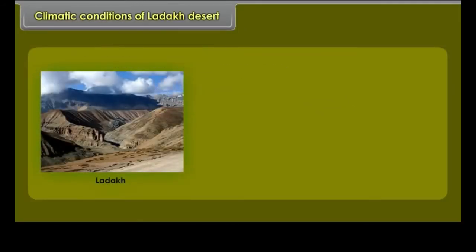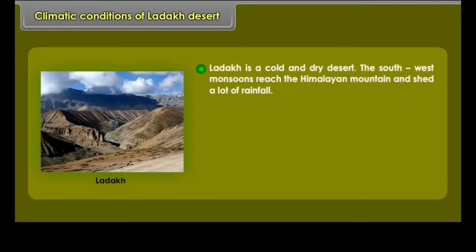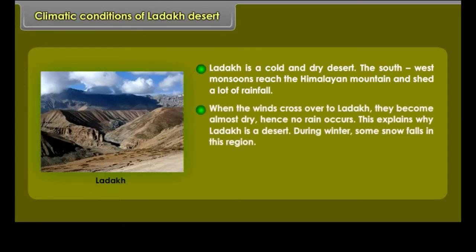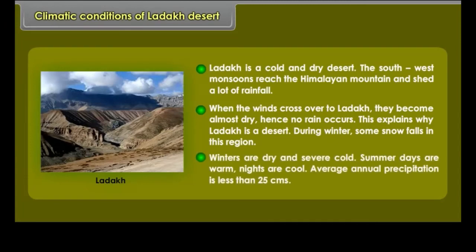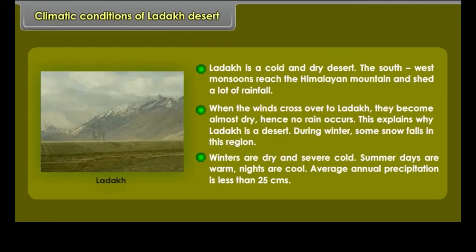Climatic Conditions of Ladakh Desert. Ladakh is a cold and dry desert. The southwest monsoons reach the Himalayan mountains and shed a lot of rainfall, but when the winds cross over to Ladakh, they become almost dry, so no rain occurs. During winter, some snow falls in this region. Winters are dry and severely cold, while summer days are warm and nights are cool. Average annual precipitation is less than 25 centimeters.